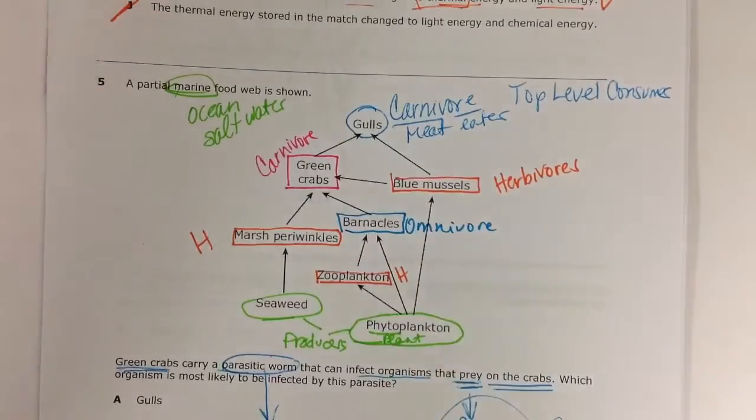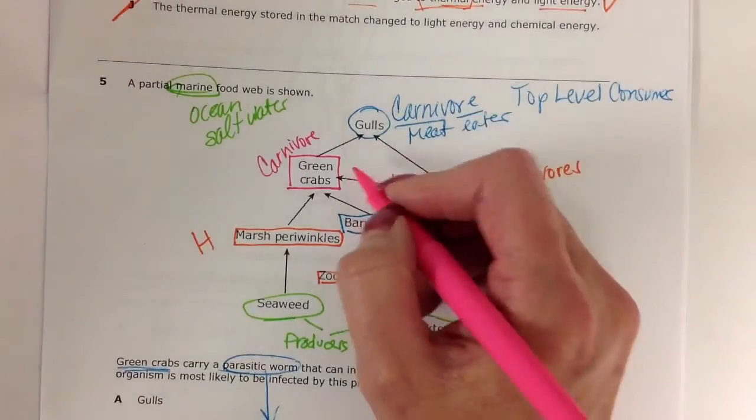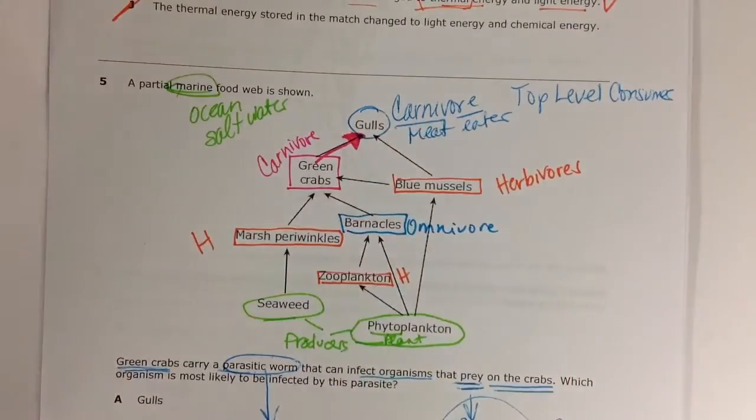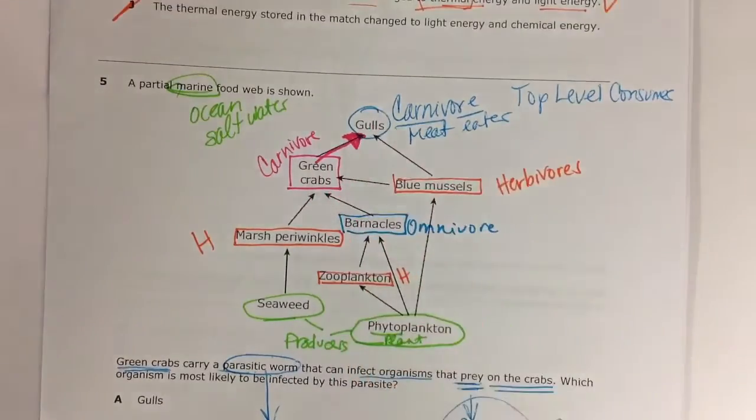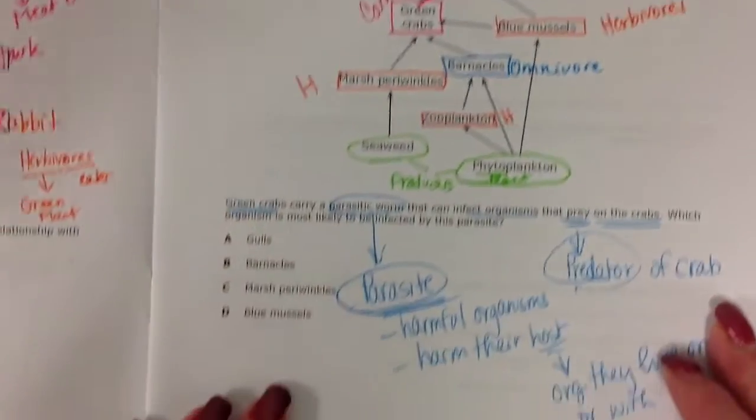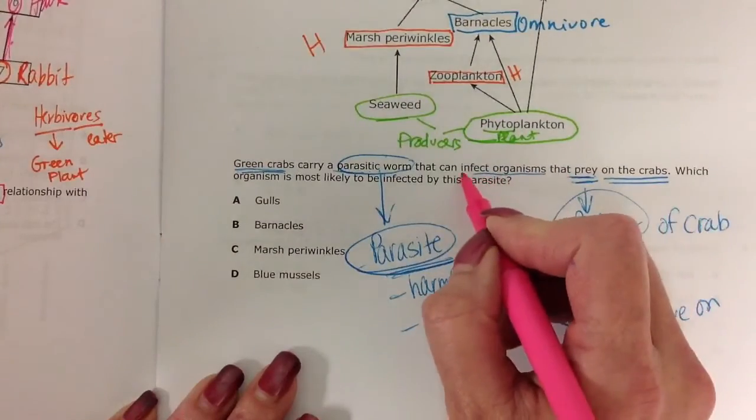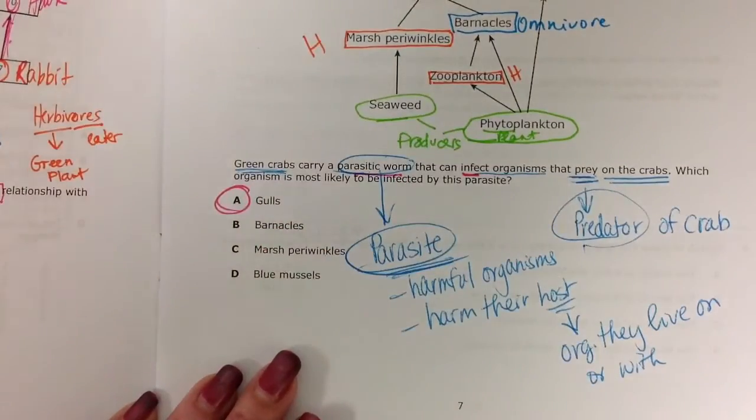Well, if we follow the food energy or the flow of energy from the crab, meaning arrows that leave the crab, giving energy to other organisms, the only organism that feeds on the crab is the gull. So the gull is going to be the organism that is going to be infected with this parasite that the green crab carries.